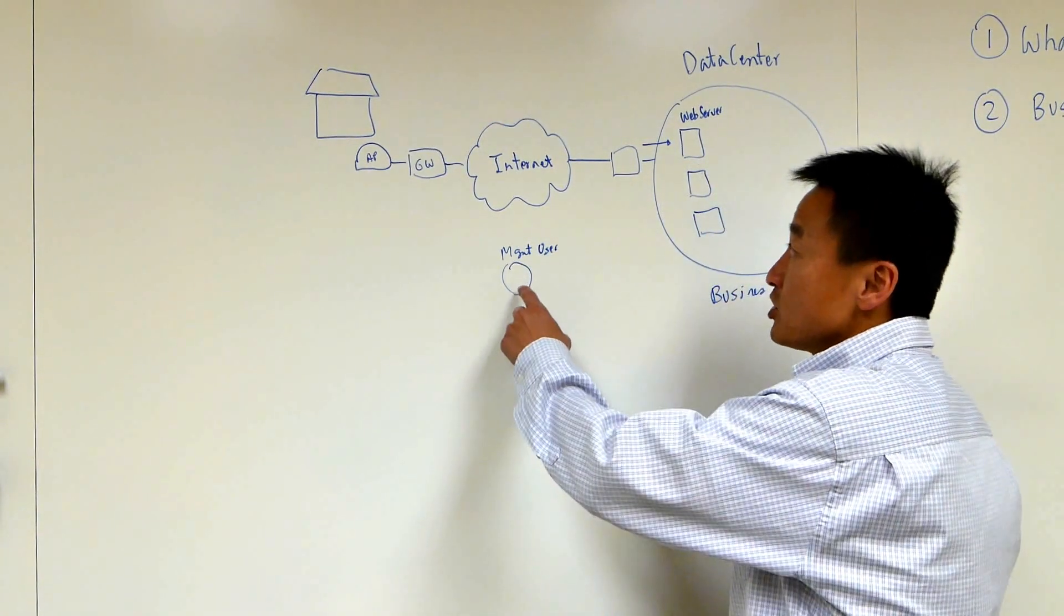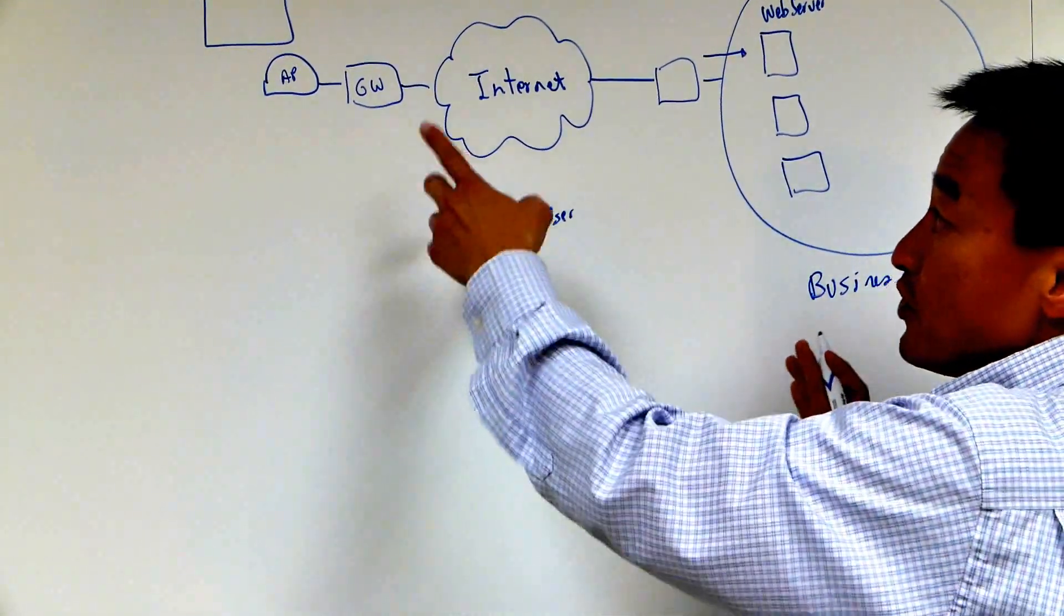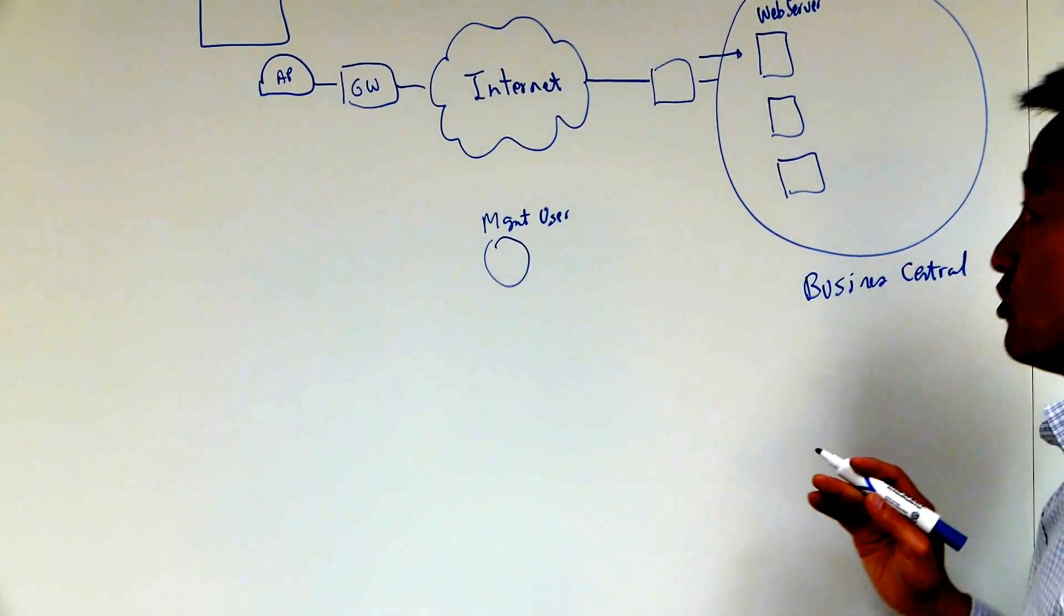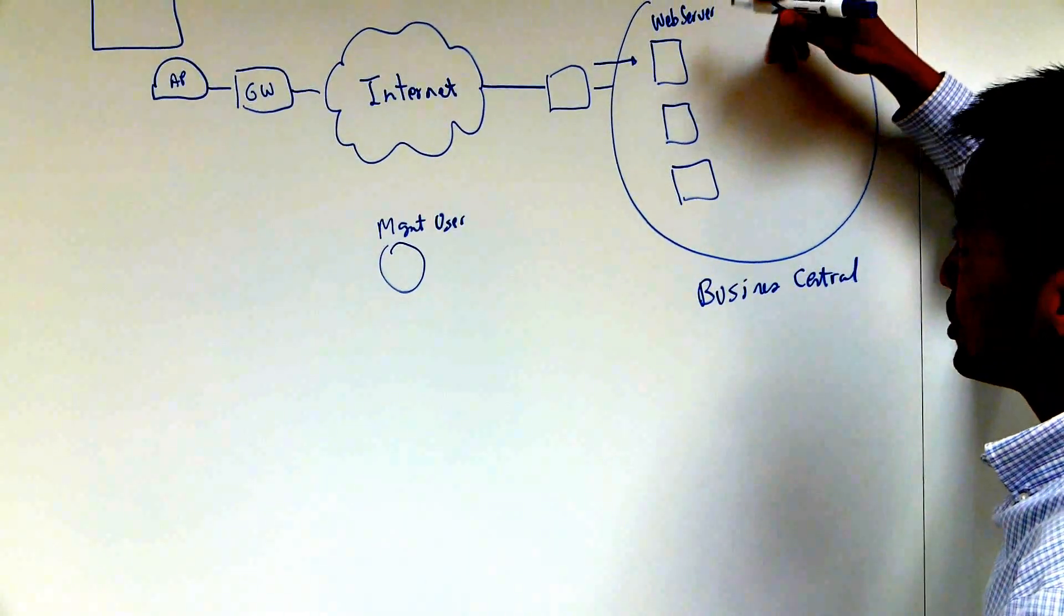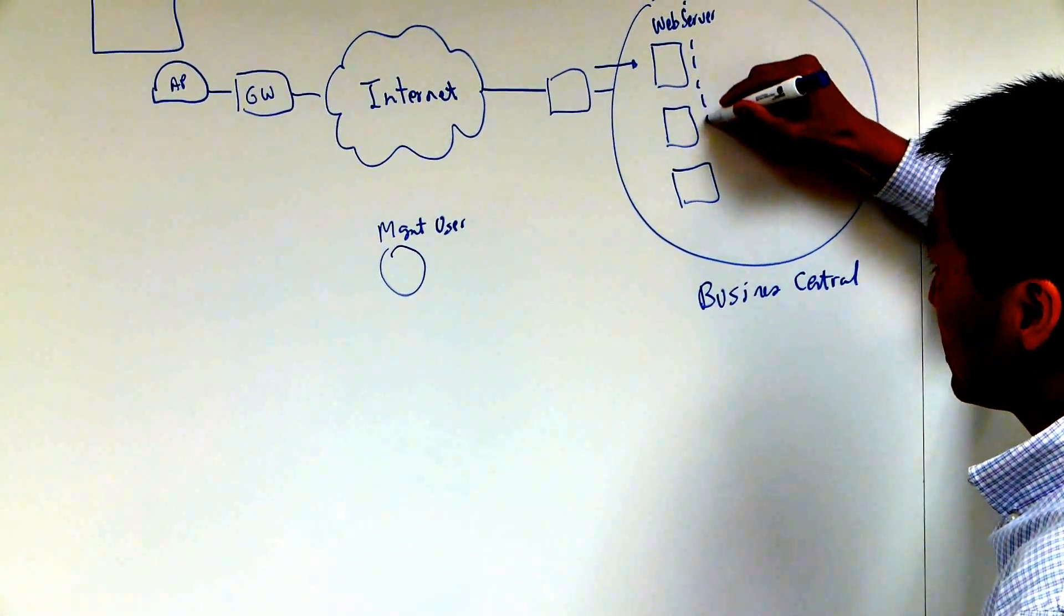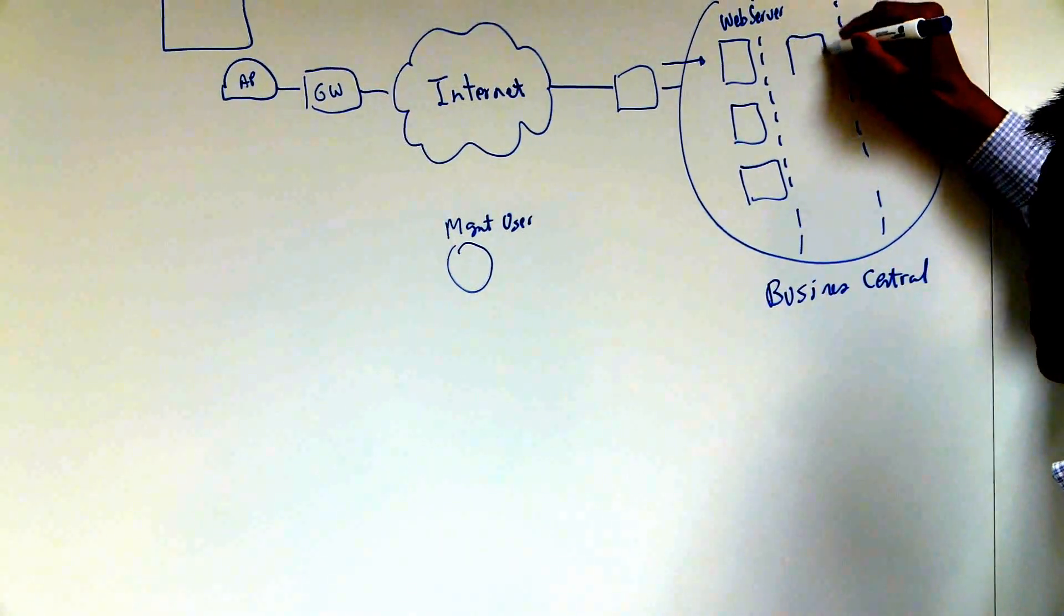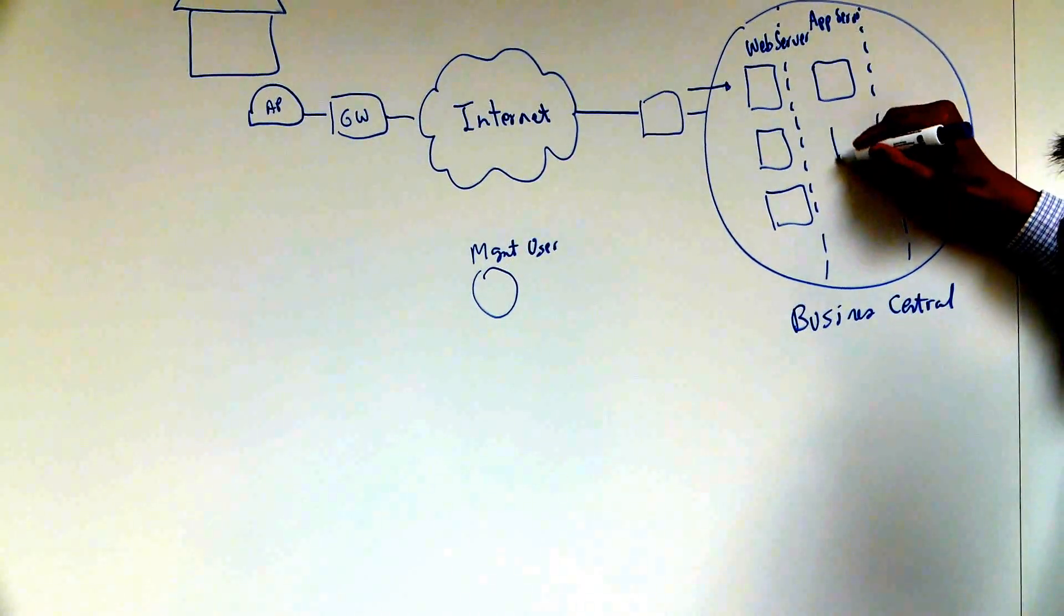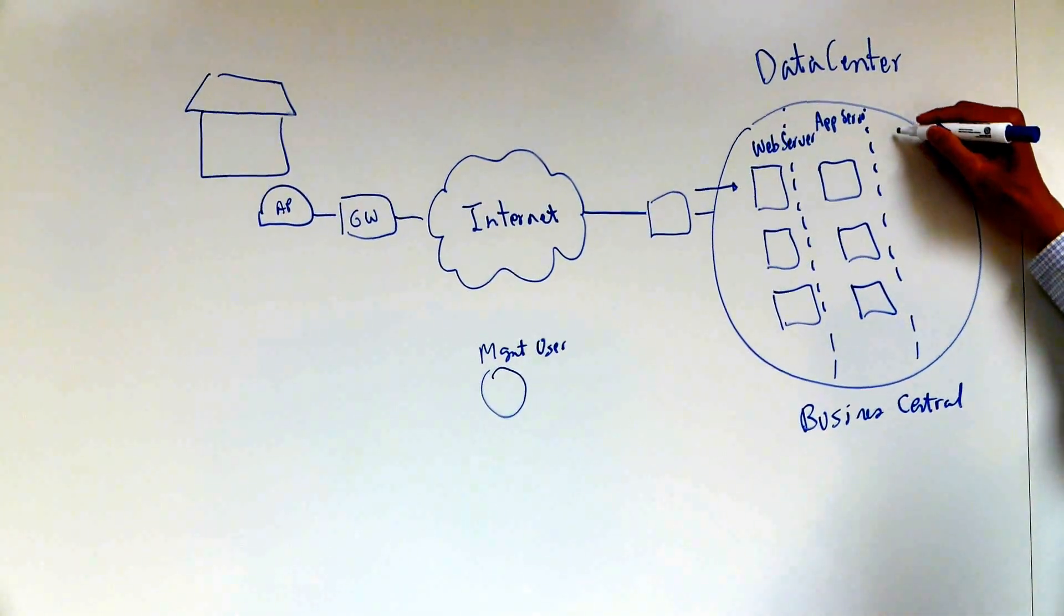But the concept of management users is that the person logs in to the Business Central to configure different access points. It could be a home, it could be a coffee shop in different locations. So the first tier of Business Central is a web server tier. And the second tier we have is application server. And then on the back end you have the database.